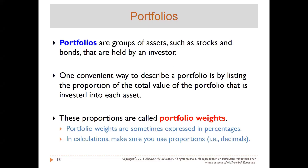Let's first define what a portfolio is. Portfolios are groups of assets such as stocks and bonds that are held by investors. As there are more than one stock in a portfolio, one convenient way to describe a portfolio is by listing the proportional total value invested into each asset — this is called a portfolio weight. A portfolio weight is the percentage of the total value of the portfolio invested in each stock.